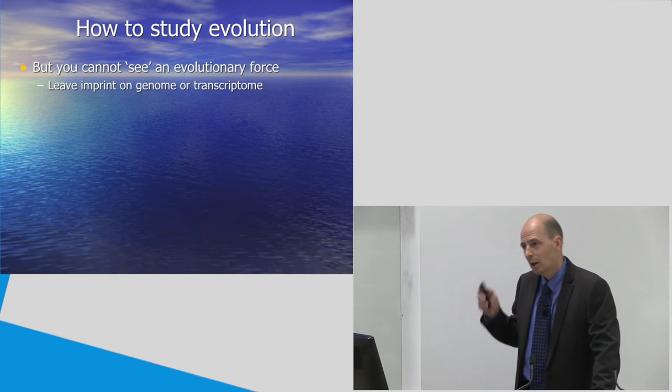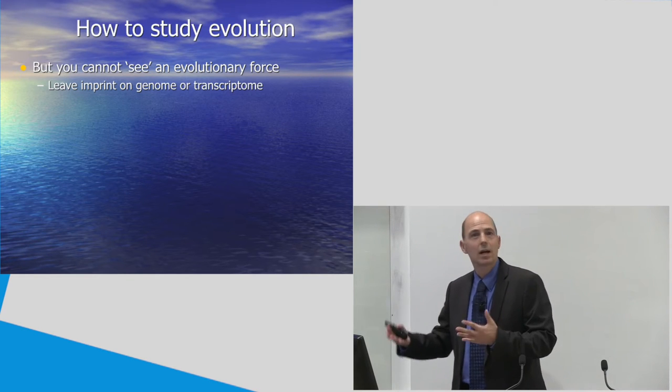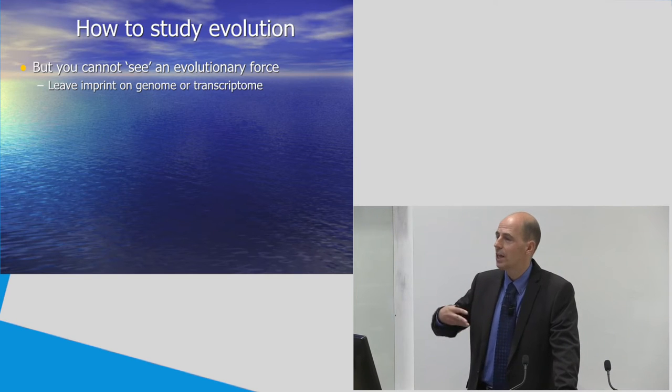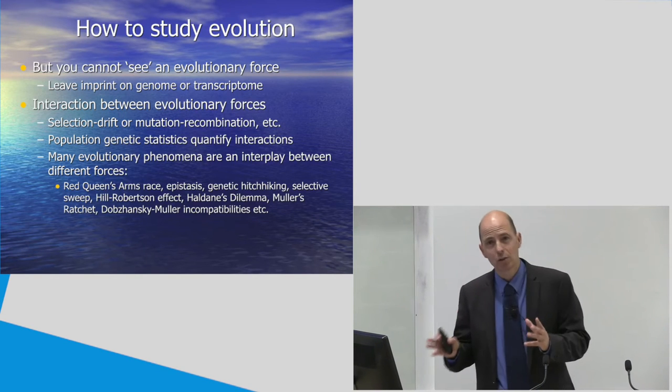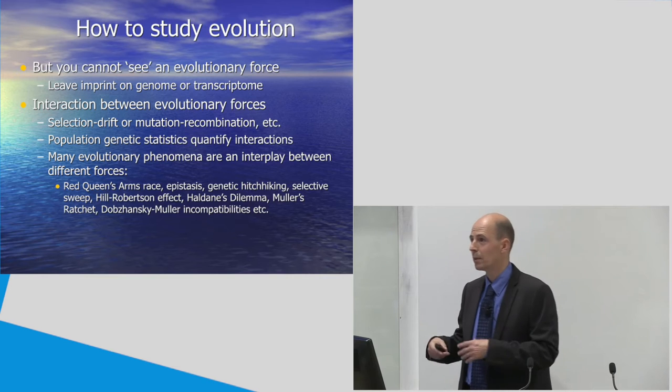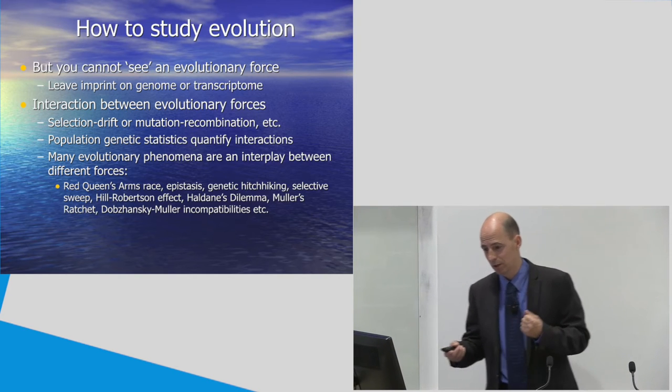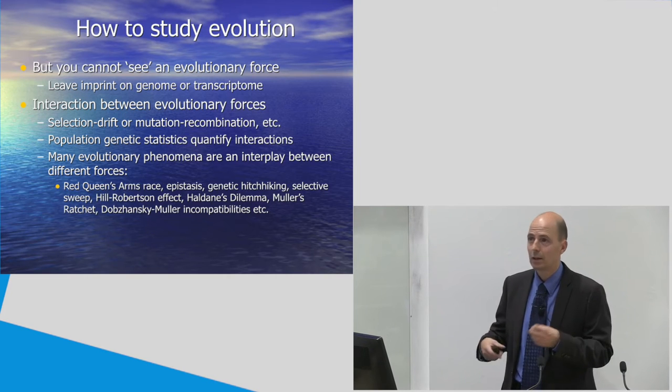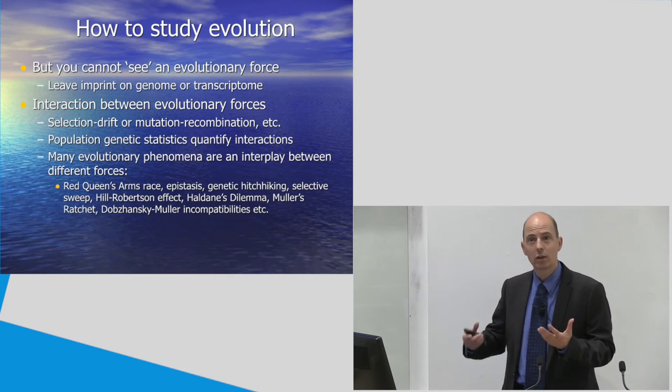Now, how can you study these evolutionary forces? Well, one of the problems or one of the challenges really is that you can't see an evolutionary force. You can only see the results. It's like gravity. You can't see the gravity here, but you can see the effects of gravity. So, with the evolutionary forces, they leave an imprint on the genome or the transcriptome or the methylome. And that is what we study. And in fact, what we study is typically the interaction between those evolutionary forces. So, we look, for example, between selection and drift or mutation and recombination. And a lot of the statistics which have been developed are expressing the equilibrium state between those different forces. So, many evolutionary terminology expresses also this type of interplay, like for example, red queen's arms race between host and parasite or genetic hitchhiking. And those are terms that capture the interaction between different evolutionary forces.